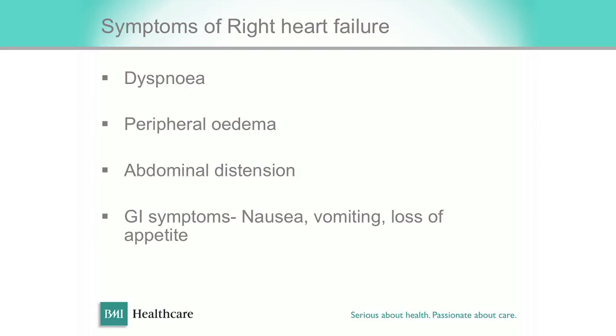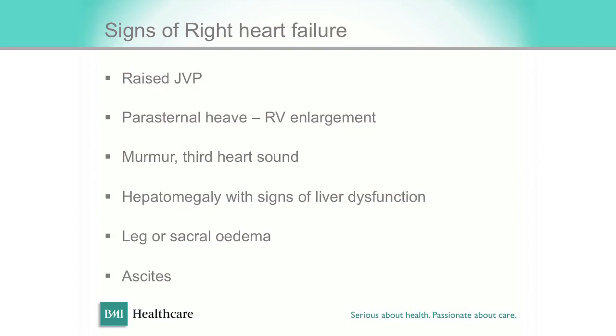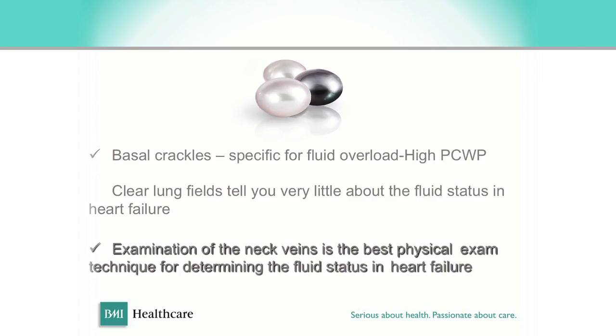The symptoms of right heart failure, on top of the above, include peripheral edema, abdominal distension, and GI symptoms. We have come across a few right heart failure patients initially managed by surgeons, and then the ECG showed the diagnosis. The signs of right heart failure are raised JVP — so it is worth looking at the neck as well as the feet — and also feel the abdomen for tenderness in the liver area. The three pearls: crackles almost invariably indicate fluid load; clear lung fields do not mean no fluid load; and examination of the neck is the best specific sign that the patient has fluid load.